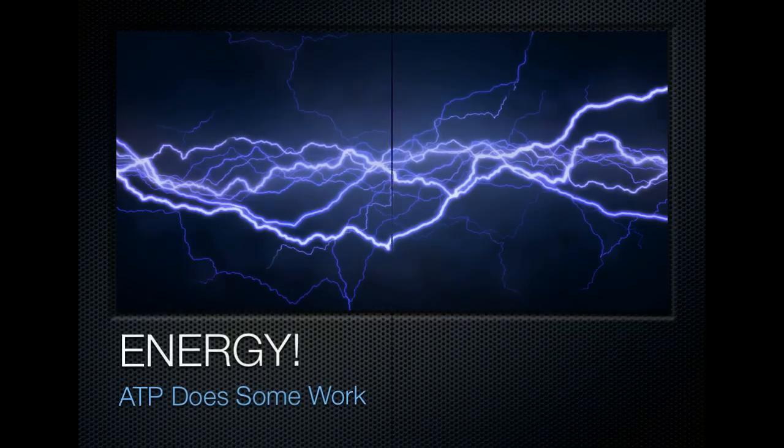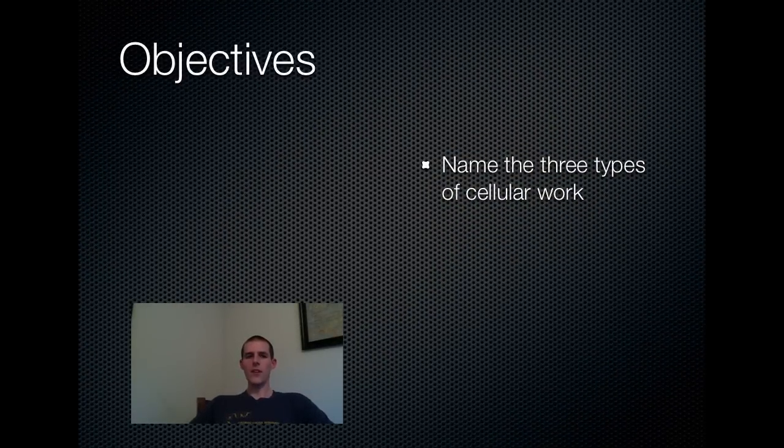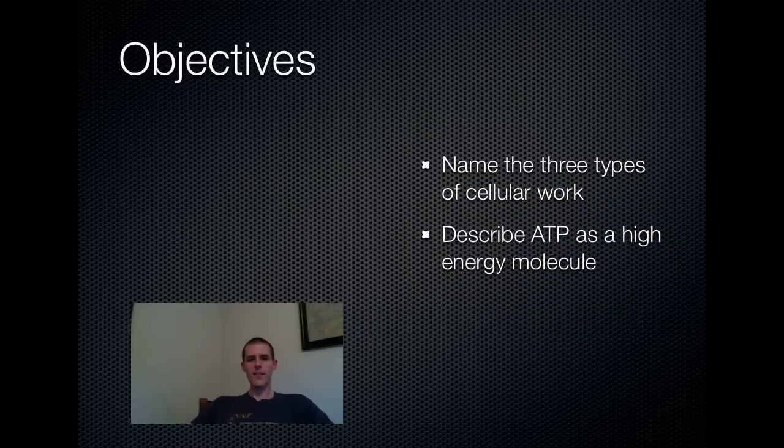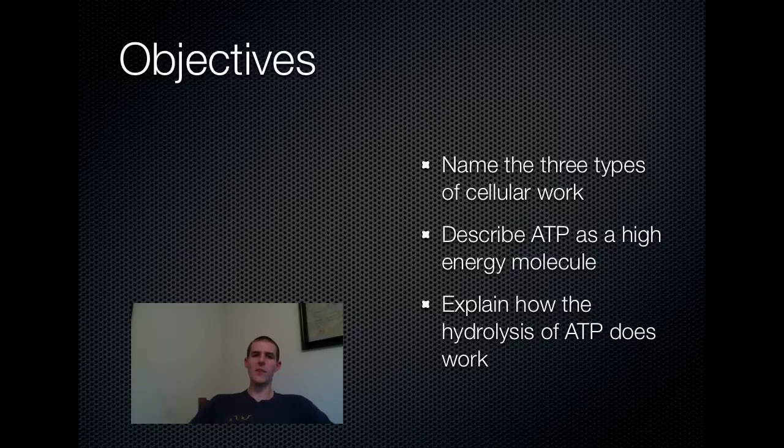So, as always, we start out with our objectives. First one is name the three types of cellular work that the body does. Second, describe ATP as a high-energy molecule, so what is ATP like? What's the structure? How does it get some work done? Finally, explain how the hydrolysis of ATP does some work. We're going to be digging back in your brains to remember what hydrolysis actually means.